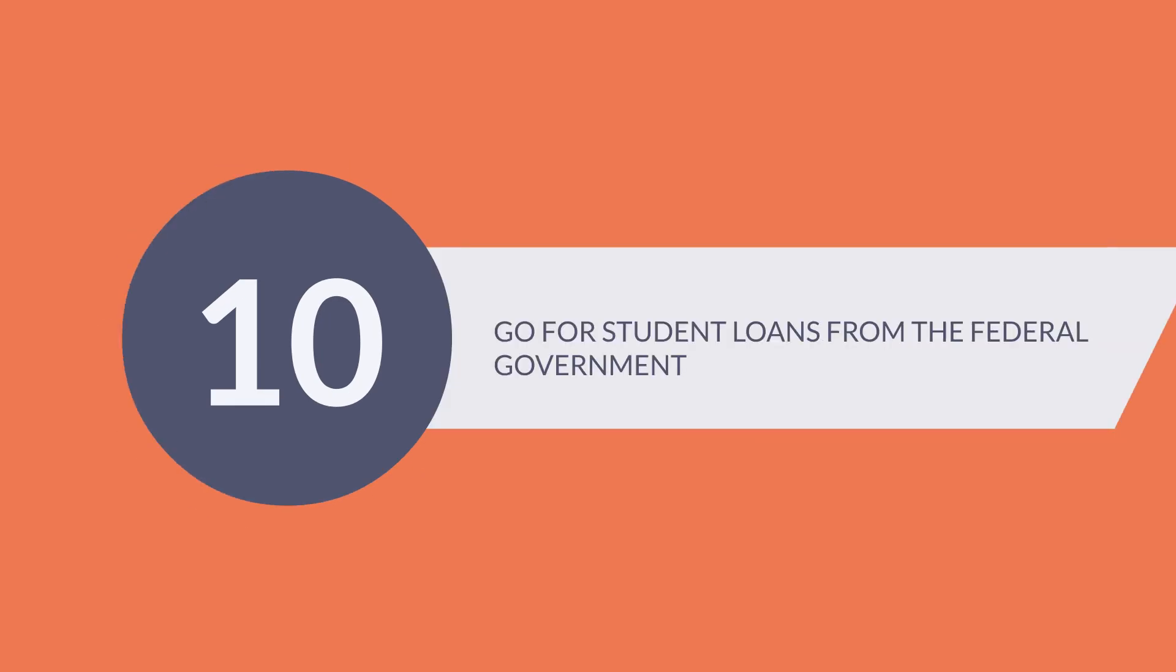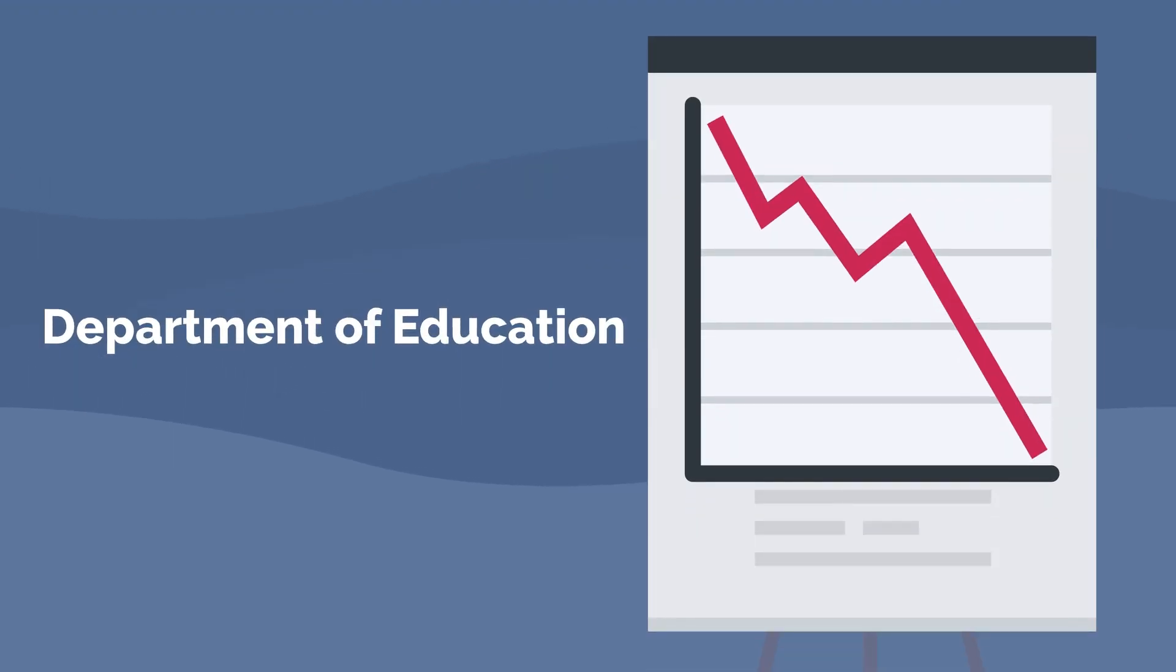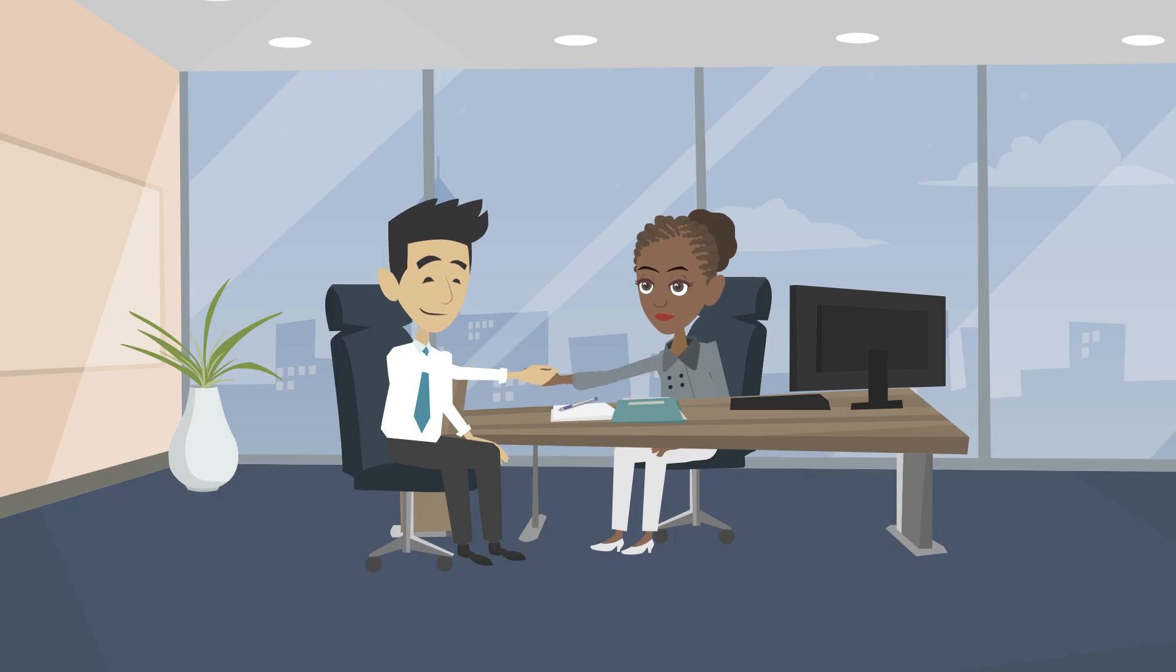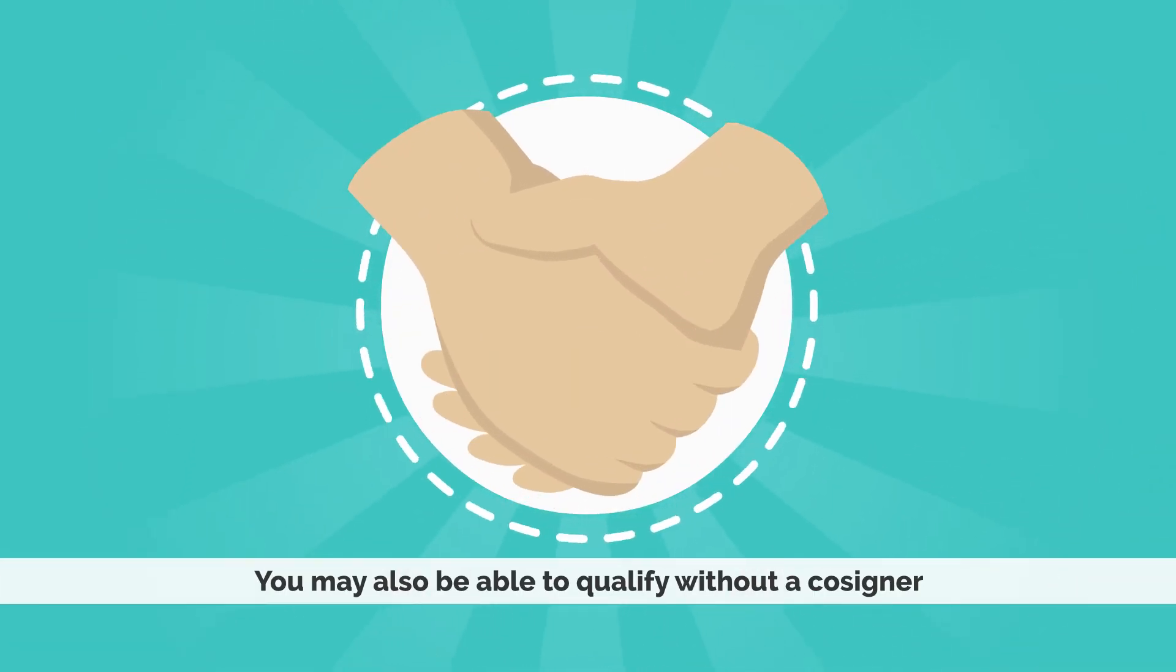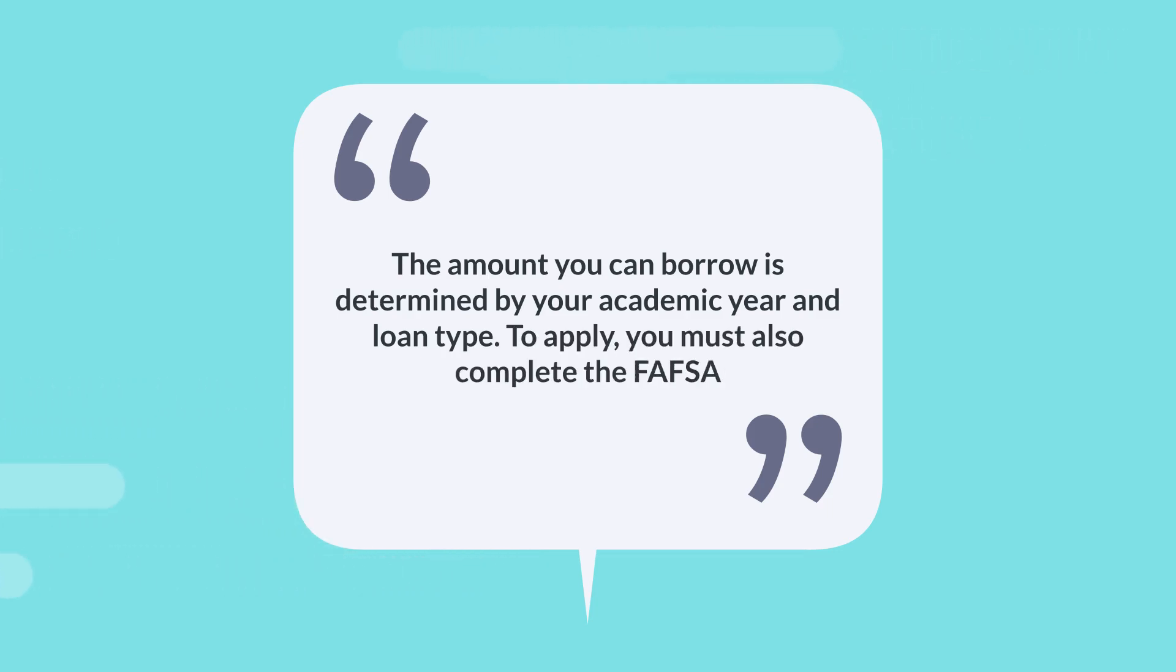10. Go for Student Loans from the Federal Government. If you must borrow, you should probably start with federal student loans. They are provided by the Department of Education and have lower interest rates and more flexible repayment schedules than private student loans. Depending on the sort of loan you want, you may also be able to qualify without a cosigner. The amount you can borrow is determined by your academic year and loan type. To apply, you must also complete the FAFSA.